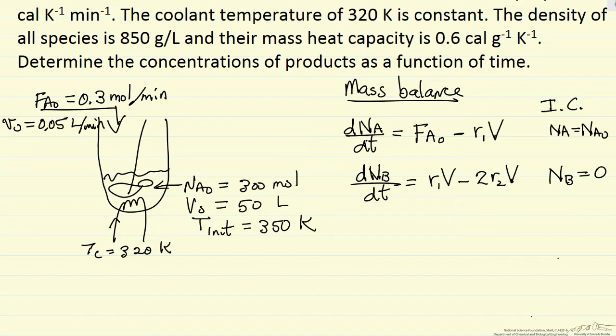And then the other component, since we want the concentrations, it's the number of moles of D with respect to time. There's no D flowing in or out, so the only D is because of reactions, so stoichiometric coefficient plus 1, and we start with no D in the reactor, so these are initial conditions. Mass balances, now we just need to write down the energy balance.